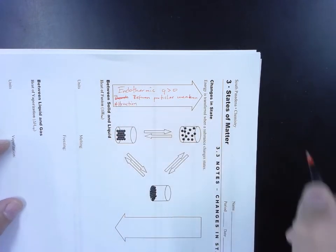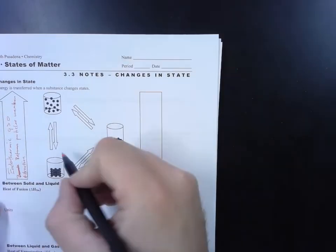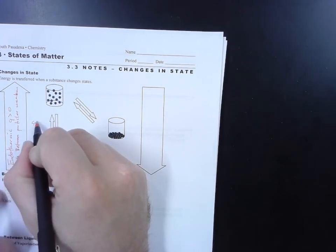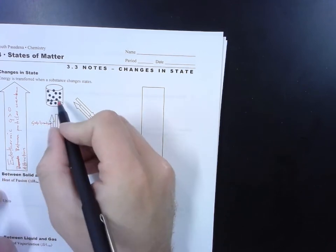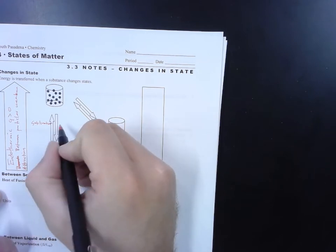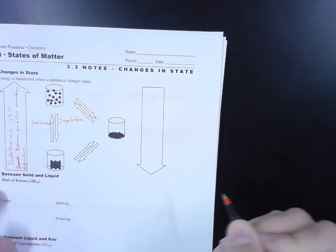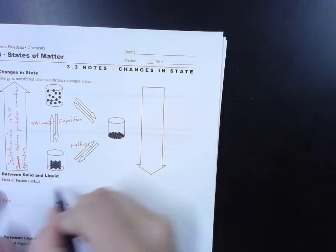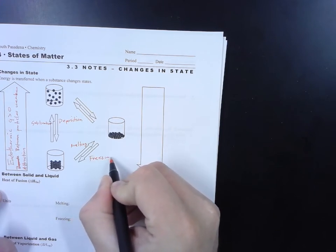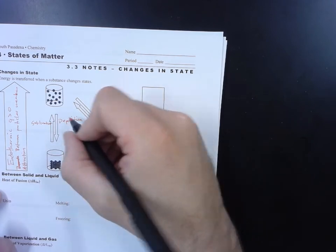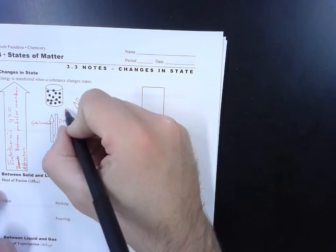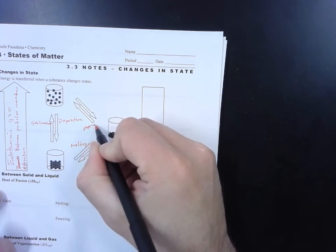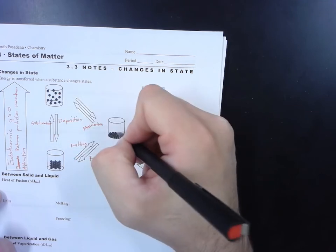So let's go ahead and identify what each of these is. If we're going from a solid to a gas, we call that sublimation. Gas to a solid is called deposition. Solid to a liquid is called melting. Liquid to a solid is called freezing. Liquid to a gas is called vaporization. And gas to liquid is called condensation. So those are phase changes, along with their names.